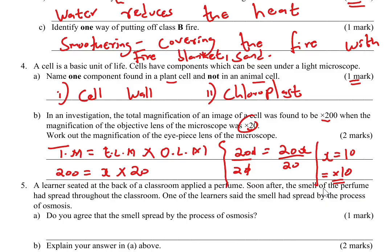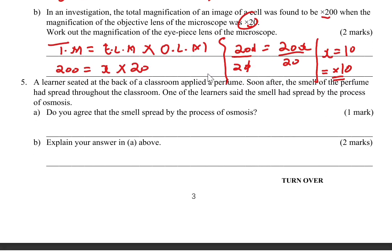Question 5: a learner seated at the back of a classroom applied a perfume. Soon after, the smell had spread throughout the classroom. One learner said the smell spread by osmosis. Part A: do you agree that the smell spread by osmosis? The answer is no — the spreading of perfume is not osmosis. You score one mark.